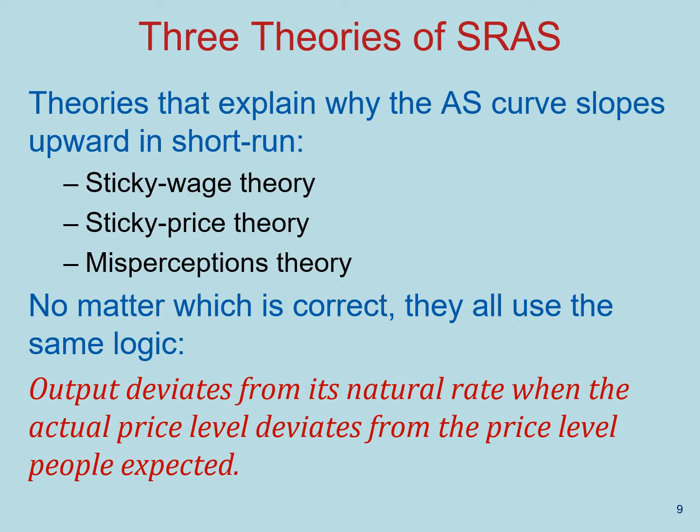There are three main theories proposed by economists to explain the upward slope of the short run aggregate supply: sticky wage theory, sticky price theory, and the misperceptions theory. I will not talk about each of them in detail.